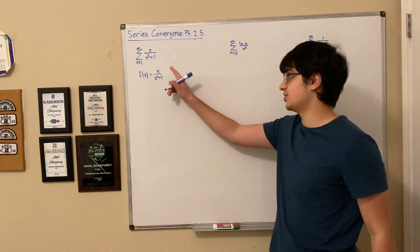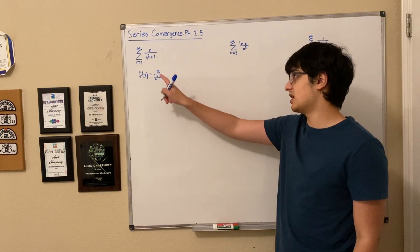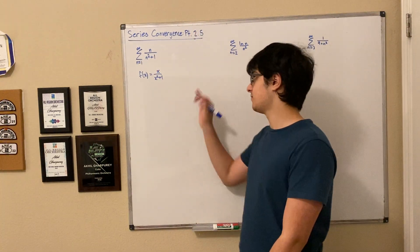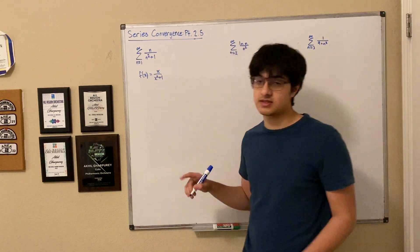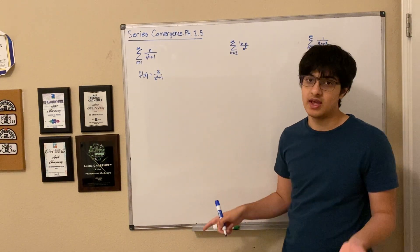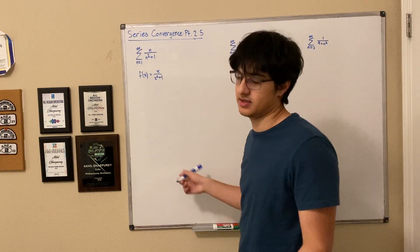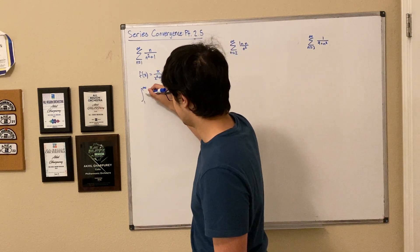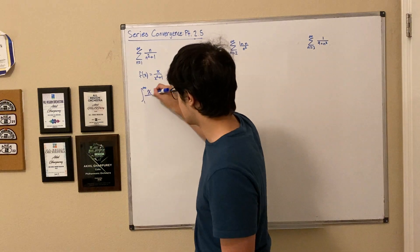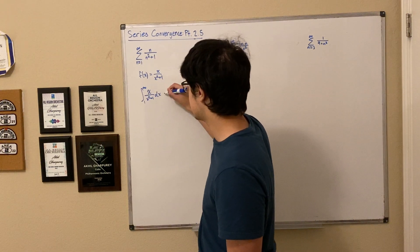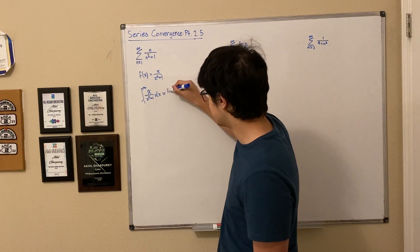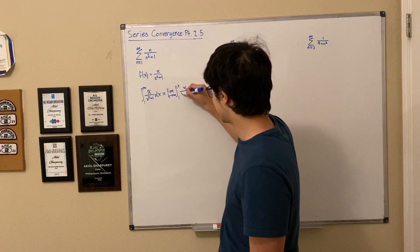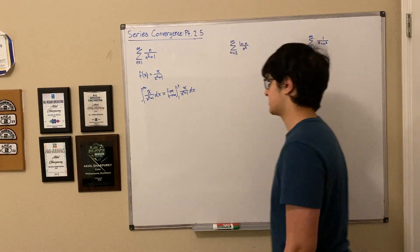Starting with the first example: the series from 1 to infinity of n over n² + 1. This had an inconclusive result for the nth term test, but we'll get a result this time with the integral test. Let f(x) = x over x² + 1. This is positive because x² + 1 is always positive and x from 1 to infinity is always positive. It's decreasing because x² + 1 outgrows x, and it's continuous — no value of x makes the function undefined. So we can use the integral test.